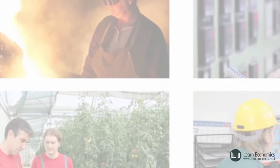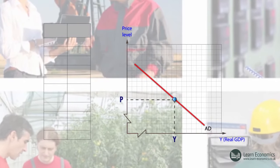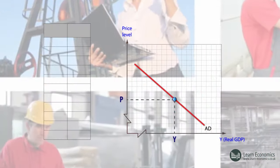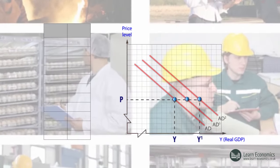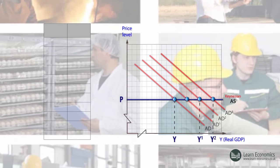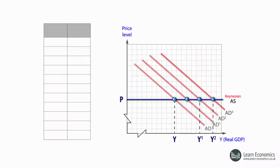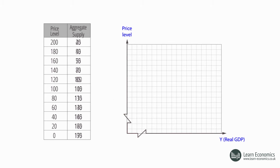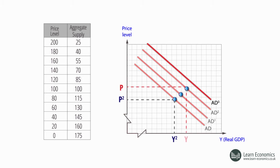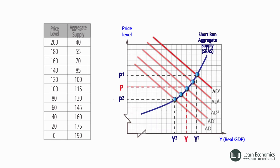In contrast, Keynesian economists assumed that supply could adjust to demand, and the only factor determining the level of output and employment would be the position of the AD curve. Hence, the AS curve is horizontal. To solve this dilemma, modern economists differentiate the short-run AS curve, called SRAS, and the long-run AS curve, called LRAS, and also accept that, in the short-run, SRAS is upward sloping.